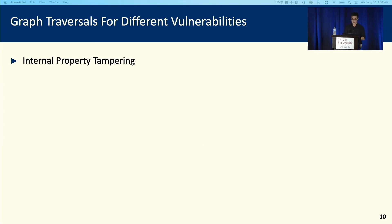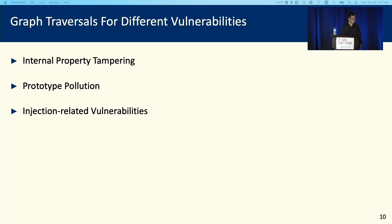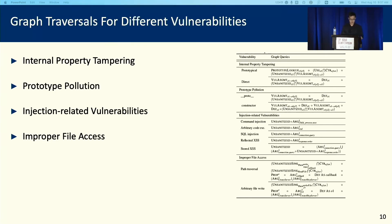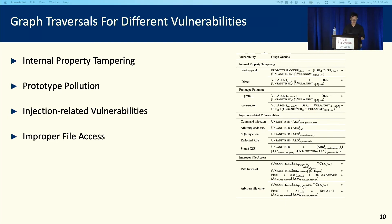Besides internal property tampering, we also handle other types of vulnerabilities like prototype pollution, injection-related vulnerabilities, and improper file access. We also have subcategories for vulnerabilities, and to detect those, we can just use the graph queries listed here to do the detection.